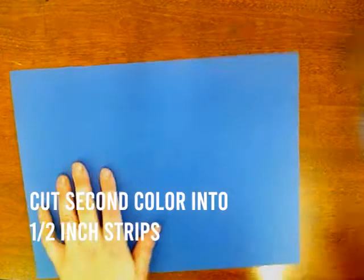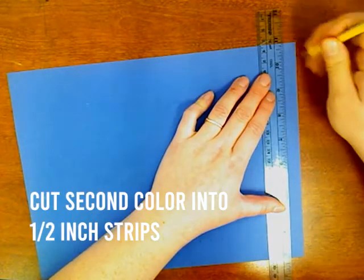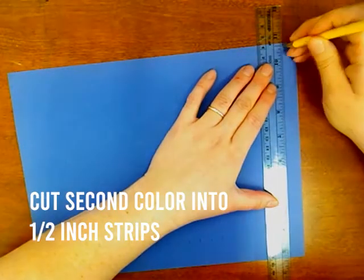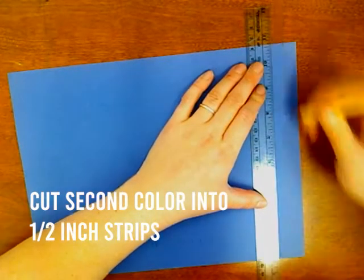After we've cut our warp, we need to cut our weft. So I'm going to cut my blue sheet into half inch strips all the way through. Now that I have my strips, it's time to start my weaving.